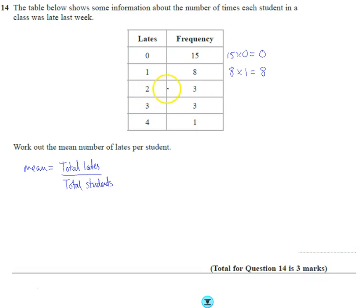These three were late twice, so these three students were late twice, that contributes six lates to the total number of lates.